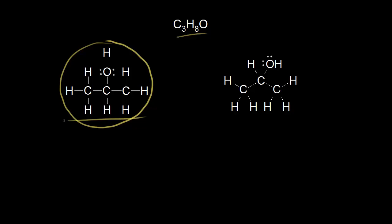If you look at the drawing on the left, it implies that these three carbons are in a perfectly straight line, but the drawing on the right does a better job of showing what the molecule looks like in reality. Those carbons are not in a perfectly straight line — you can see there's a bend to them. So when you're drawing a bond line structure and you have a carbon chain, you want to show that carbon chain in a zigzag pattern.